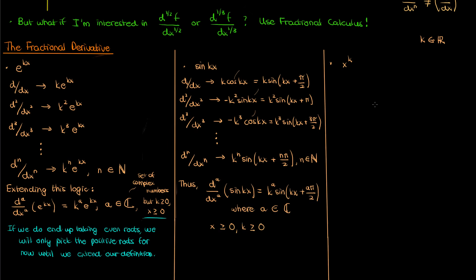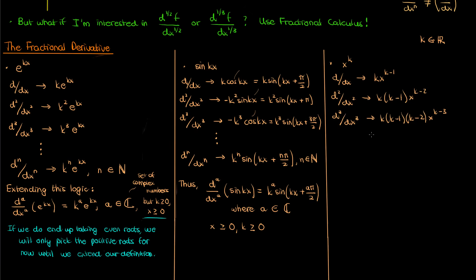Let's now move to the third column, where we'll find the fractional derivative of x to the k. The first derivative is k times x to the k minus 1 from basic calculus 1, and the second and third derivatives follow by moving the exponent down and decreasing the power on x by 1. In general, the nth derivative of x to the k is k times k minus 1, all the way to k minus n plus 1, multiplied by x to the k minus n.